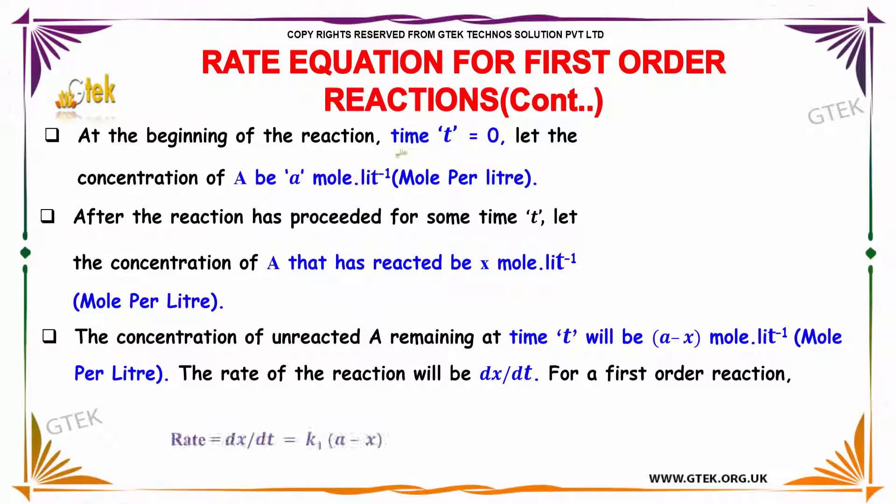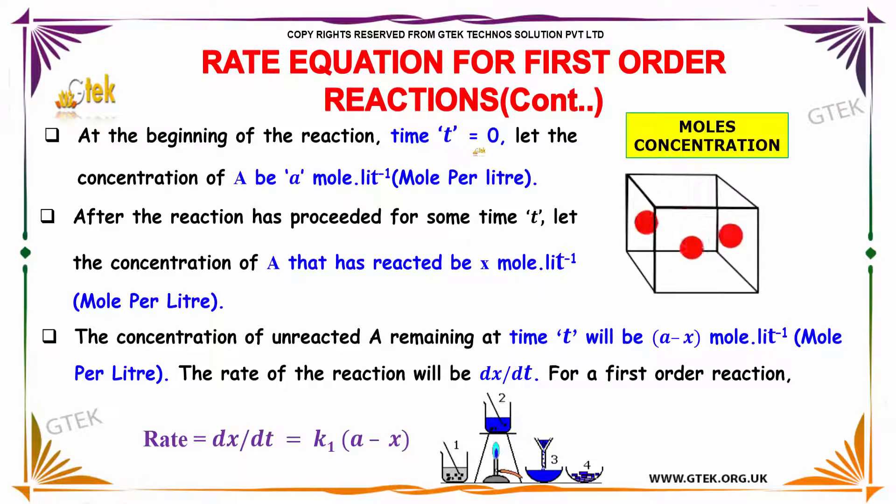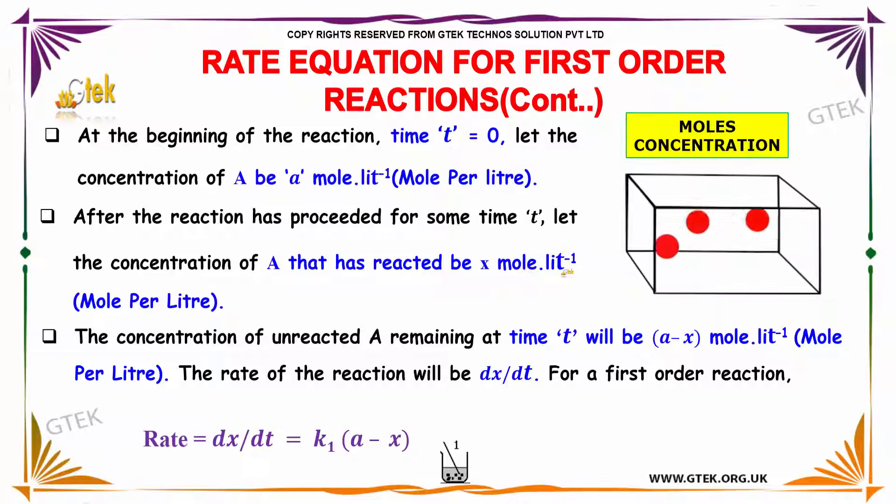At the beginning of the reaction, time t is equal to 0. Let the concentration of A be 'a' mole per liter. After the reaction has proceeded for some time t, let the concentration of A that has reacted be x mole per liter. The concentration of unreacted A remaining at time t will be (a-x) mole per liter.